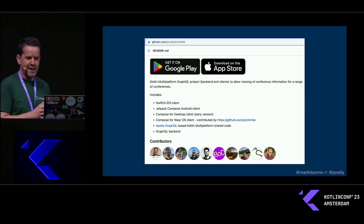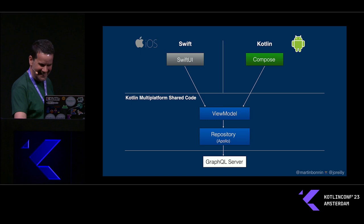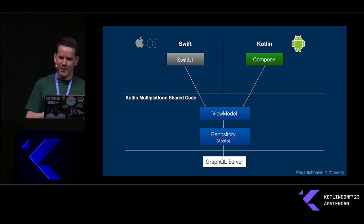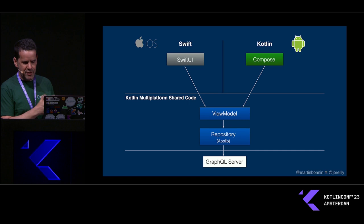This is a high-level architecture diagram for what we're building. We have the GraphQL back end, shared Kotlin Multiplatform code that includes a repository interacting with that backend using the Apollo library, a shared view model, and the iOS SwiftUI and Android Compose clients. We'll talk more about these as we build out the code.